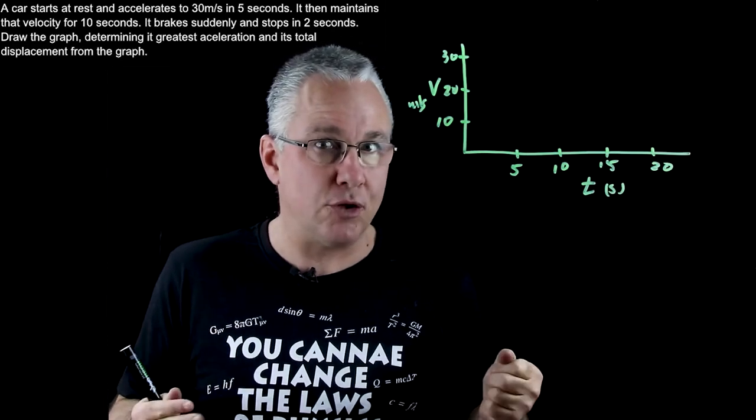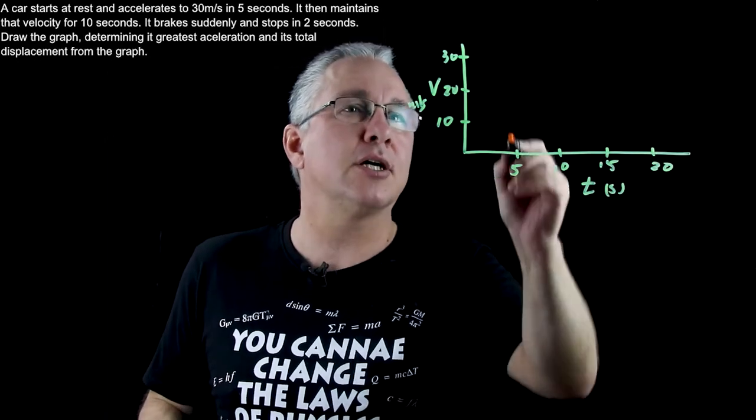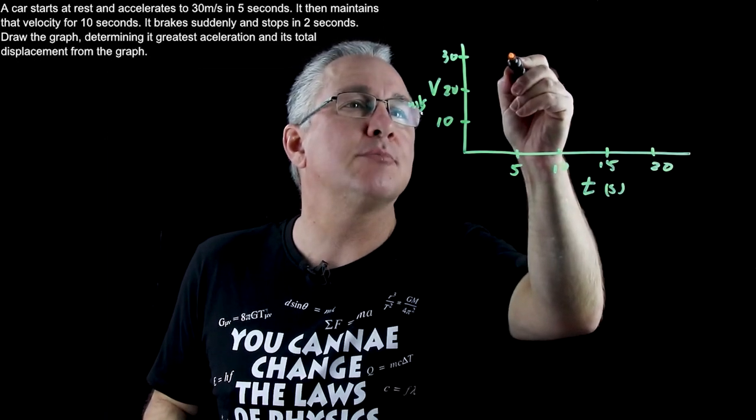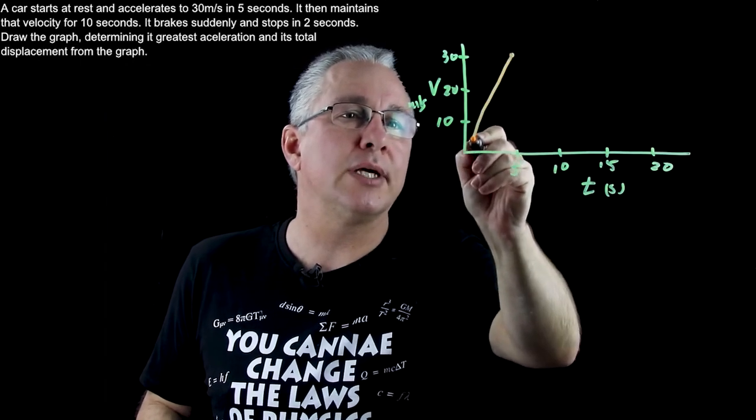What we now need to do is to graph that motion and we're told it starts at rest and goes to 30 meters per second in 5 seconds. So that means we're getting up to this particular point over here and it's a constant acceleration so we get that section there.